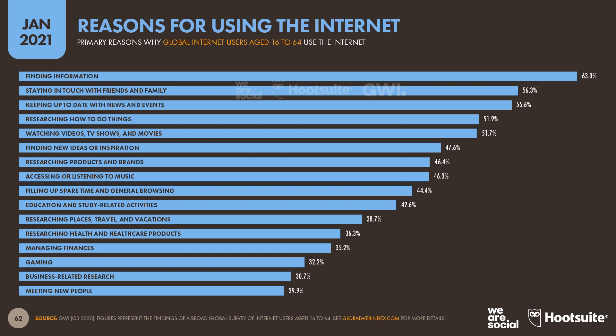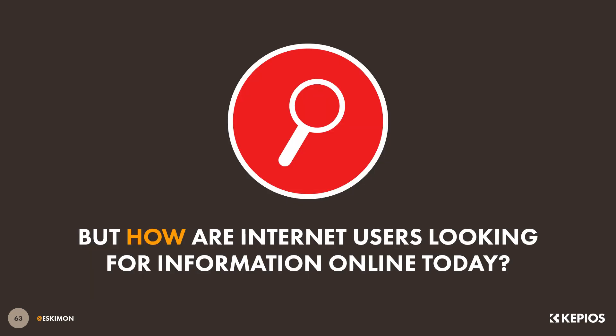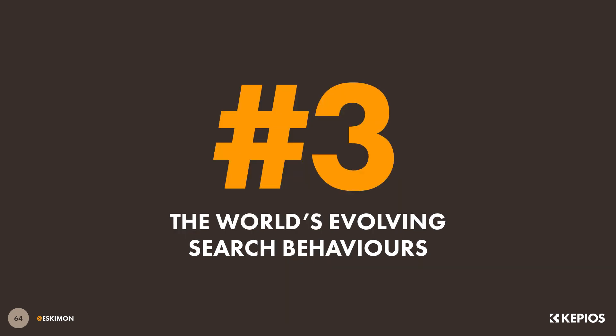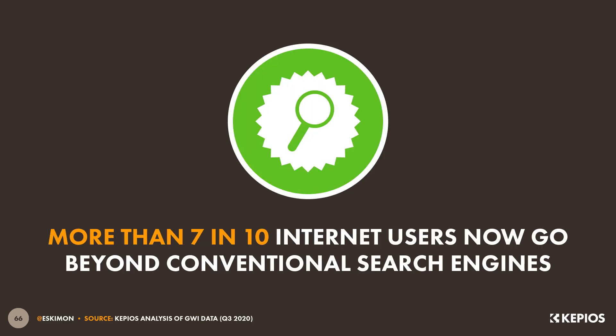Let's go back and return to those internet motivations. Finding information is the number one reason why the world's internet users go online today, so let's take a closer look at how they're going about looking for that information with specific reference to evolving search behaviours. It's really important to stress that 98% of the world's internet users still use search engines each month — a figure that is remarkably consistent both across geographies and across generations. However, people are increasingly turning to other kinds of online search too. GWI's data shows that seven in 10 internet users now go beyond conventional text-based search engines when they're looking for information online.